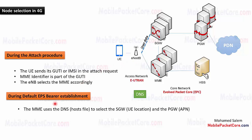Now let's see, during the EPS bearer establishment procedure, how the MME selects the SGW and the PGW that shall serve this UE. The MME uses the UE location, which is the tracking area that the UE currently exists in, in order to select the SGW. And it uses the APN that the UE shall connect to in order to select the PGW. This is done in coordination with the DNS. The MME sends the UE location to the DNS asking it to provide the SGW IP address that shall serve this UE, and sends the APN to the DNS asking it to provide the PGW IP address that shall serve this UE.